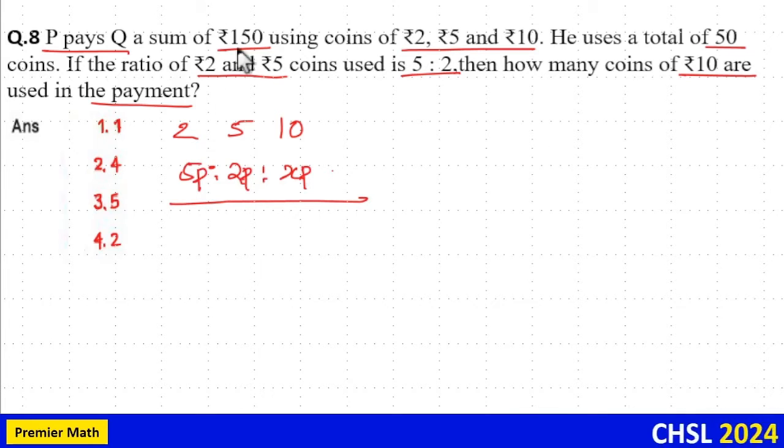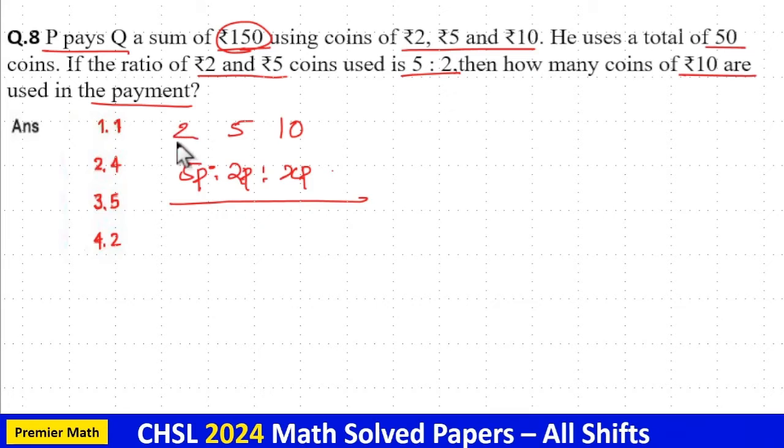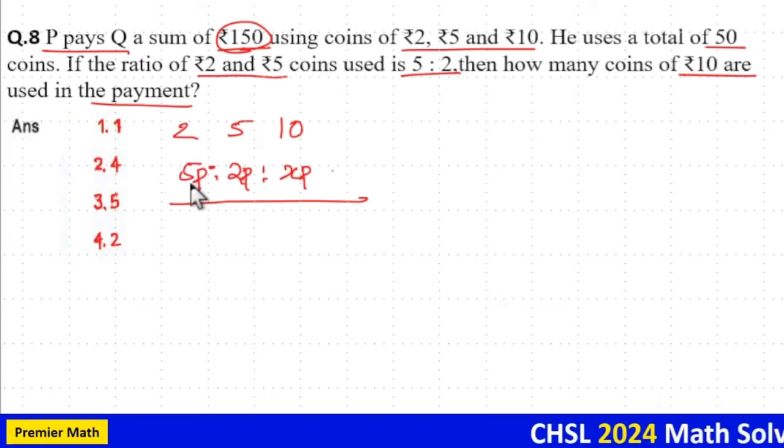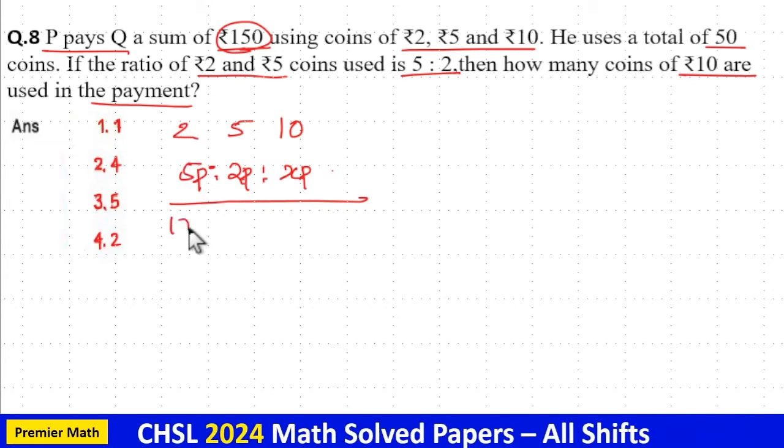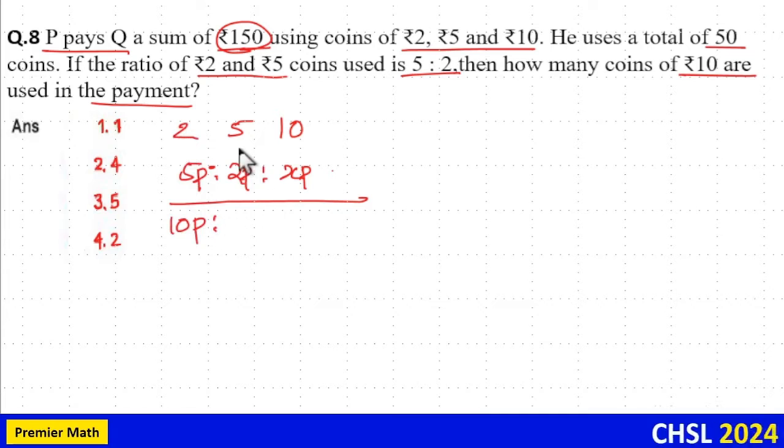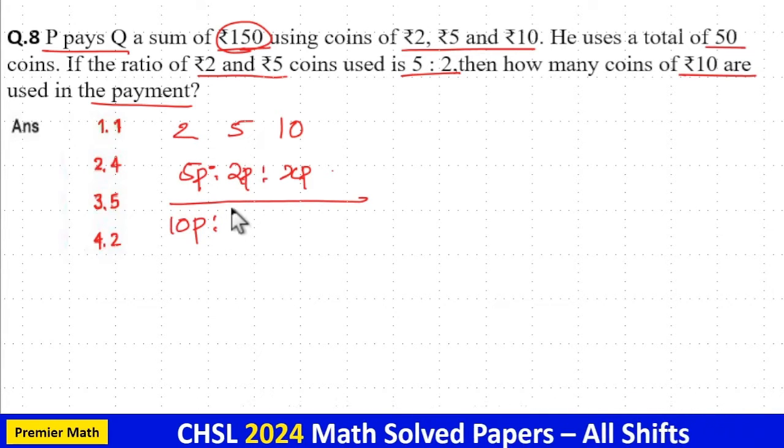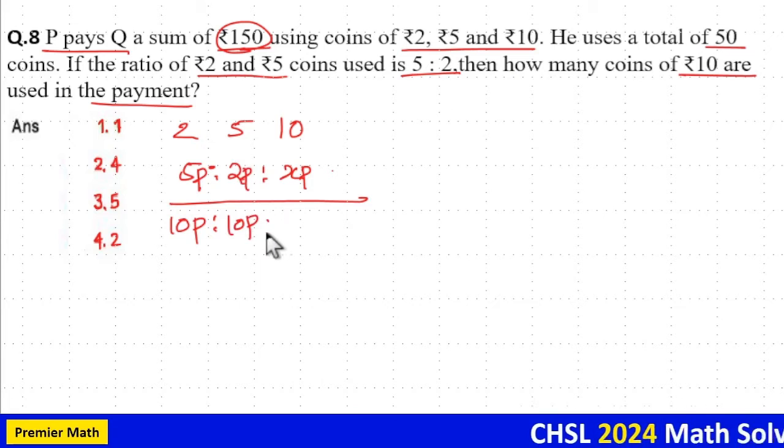Now, total amount is 150 rupee. That is, the 2 rupee coins are 5 part in number. So, 2 into 5, total 10 part rupees. Same way, 5 rupee coins are 2 part in number. So, 5 into 2, 10 part is the value.